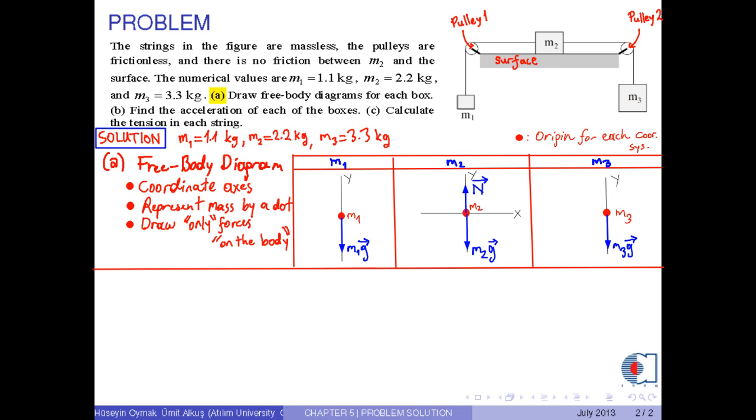Finally, since there are strings attached to the bodies, we have the tensional force like this. At this point, it is important to note that the magnitude of the tensional force on the same string is the same everywhere on the string. However, directions of the tensional force for each body have to be different.